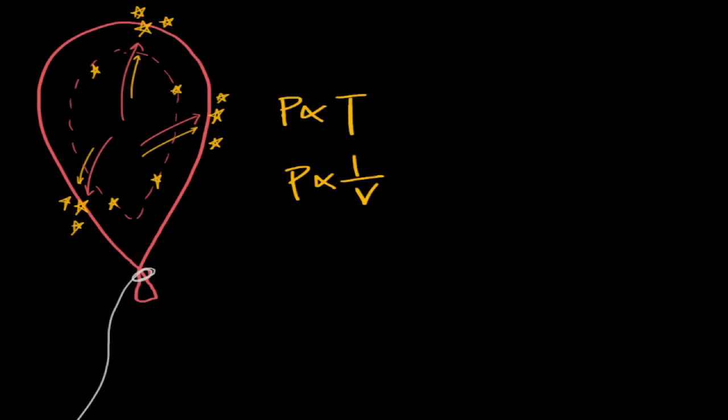And then we also showed that increasing the number of moles of gas would increase the pressure. Because moles are just a measure of the number of particles. So if we have more particles, we have more collisions. So again, pressure is directly proportional to moles. And n is the symbol for moles.